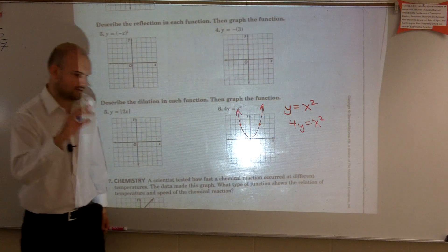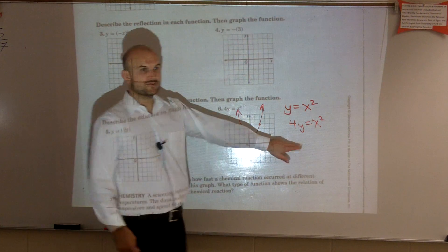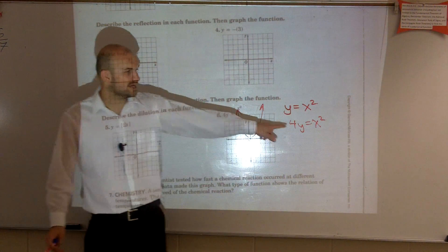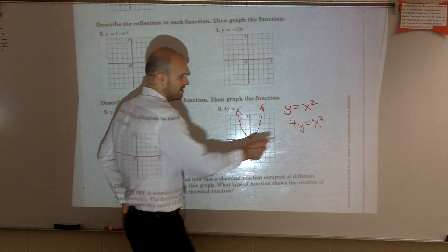So first of all, ladies and gentlemen, we have 4y equals x squared. To describe any dilation, Dimitri, what we need to do is we need to get y by itself. So how do I get y by itself? Divide by 4.